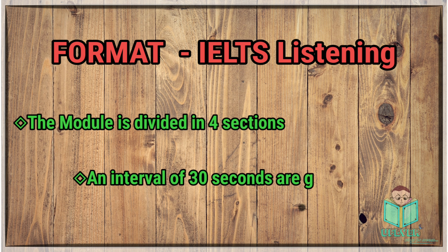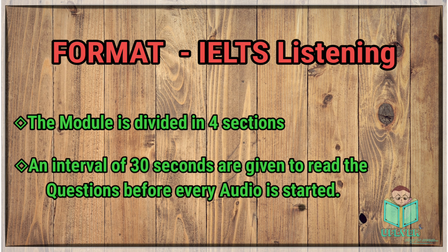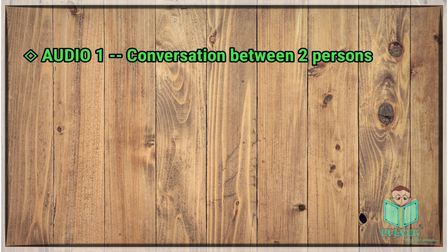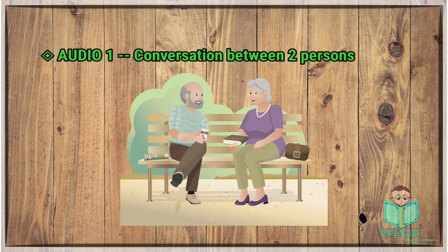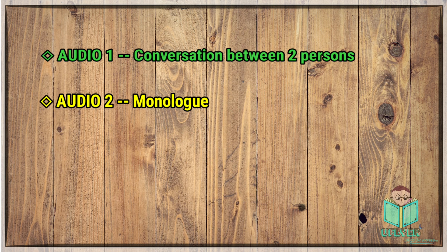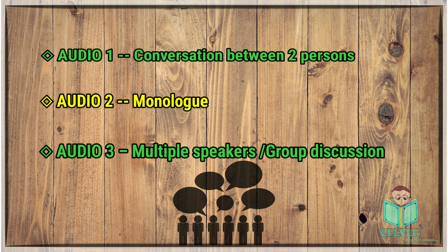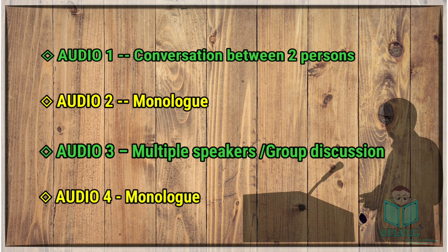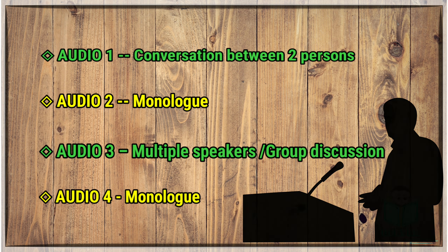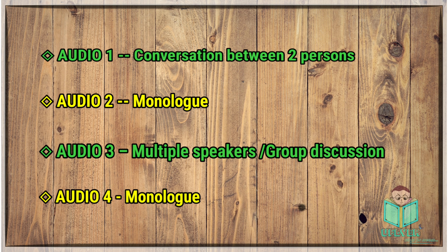The 4 audios are played at intervals. 30 seconds of time is provided before every audio begins to read the questions. Audio 1 is a conversation between two persons. Audio 2 is a monologue, which means a single speaker who explains the layout of a place. Audio 3 is usually a group discussion. Audio 4 is again a monologue and is an academic lecture. The difficulty level increases with every audio, so it can be assumed that Audio 1 will be the easiest and Audio 4 will be the toughest.